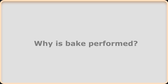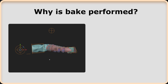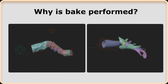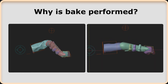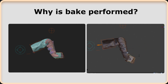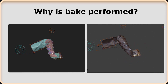Why is the baking process performed? High polygon models created to achieve detailed visuals can cause issues, especially in animated character models, as they require significant processing power and memory in 3D scenes. To minimize these issues and increase optimization, baked models are especially used in game and animation projects.